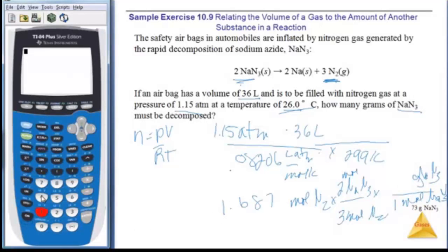So let me see, that's 14.01 times 3 equals, plus 22.99 is sodium. That's my molar mass, okay, and this is 65.02.